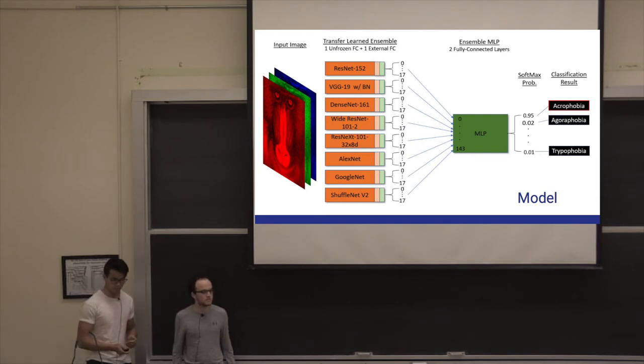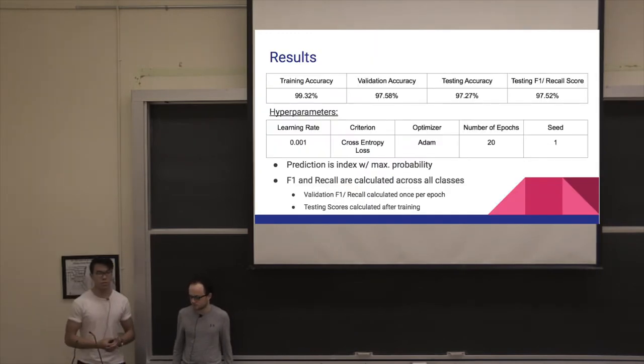The testing results from this ensemble performed surprisingly well, reaching a testing accuracy of 97.27% and a recall score of 97.52%. I'd like to emphasize that we chose to look at recall score primarily because we're more worried about false negatives. If we were to misclassify an image that had a phobia as not having a phobia, that would be more detrimental than the other way around, where a user would simply be missing out on content they would not have been able to see.